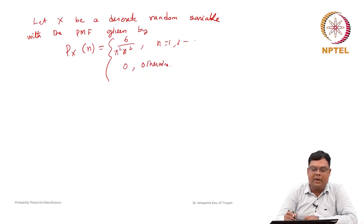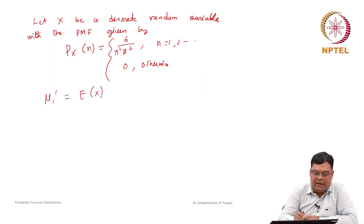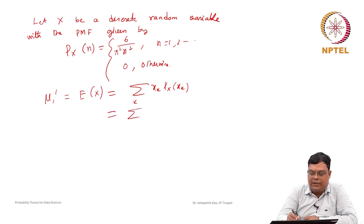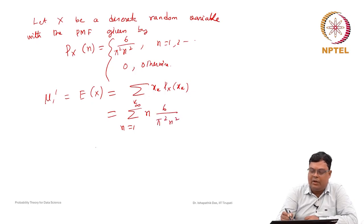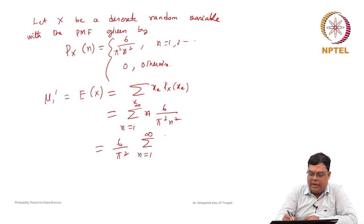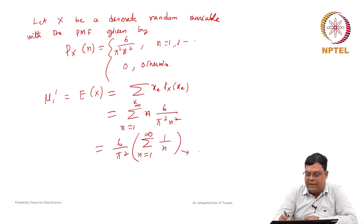To find the mean: μ₁' = E[X] = Σₙ₌₁^∞ n · [6/(π²n²)] = (6/π²) Σₙ₌₁^∞ 1/n. However, this is the harmonic series, which is divergent — it is not convergent.